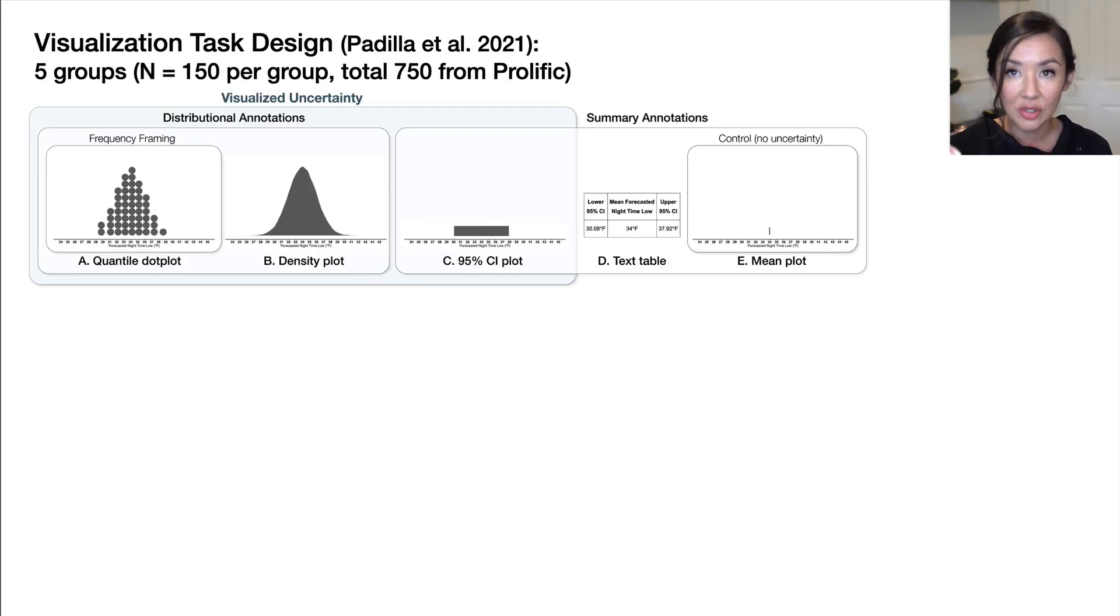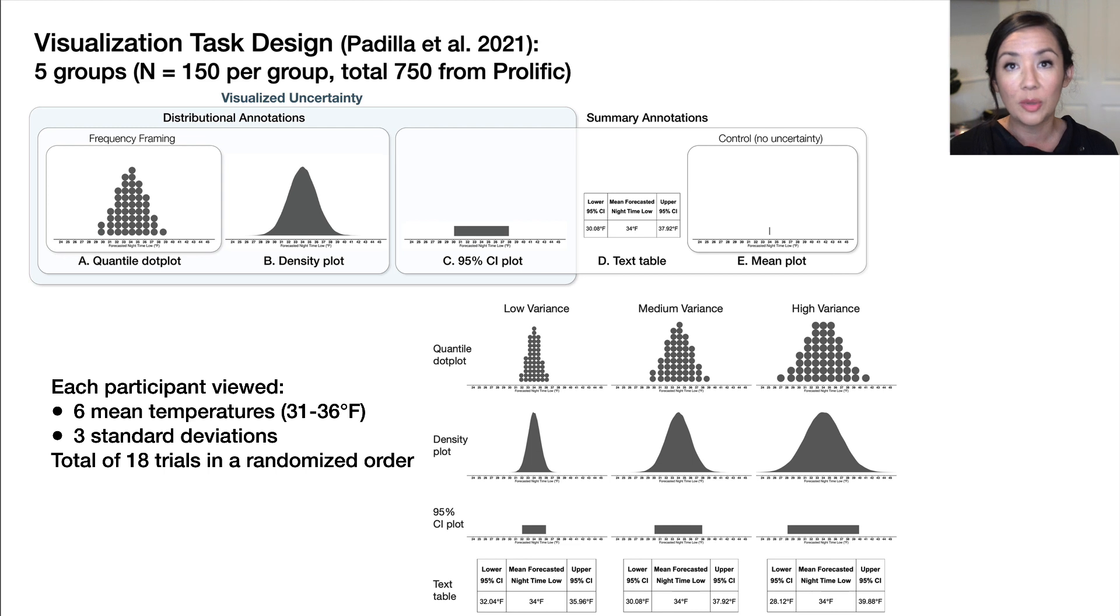For the design of the experiment, we had five different groups. Each group only saw one of these communication techniques. Within each of these groups, while participants only saw one visualization technique, the visualizations varied based on each trial. So we had different mean temperatures ranging from 31 degrees Fahrenheit to 36 degrees, and then we had three different standard deviations within the data itself.